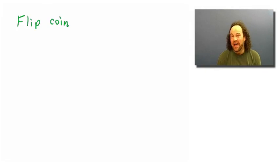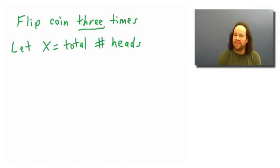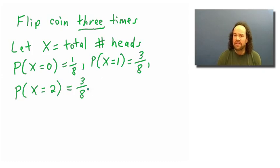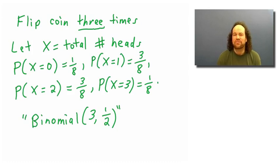If we imagine flipping a coin 3 times, the calculations get a little bit trickier, but it's still not hard to work out the probability distribution. If we let x be the total number of heads, then x could be 0, 1, 2, or 3 with corresponding probabilities. This would be called the binomial(3, 1/2) distribution. As we flip more coins, we get all different sorts of distributions.